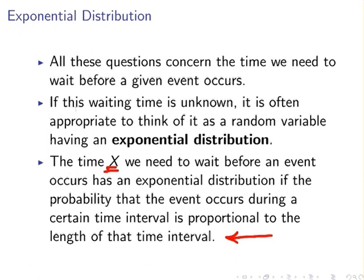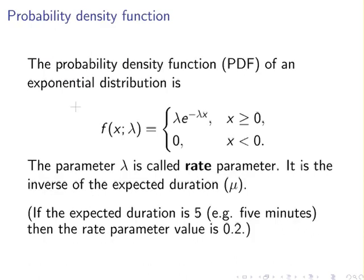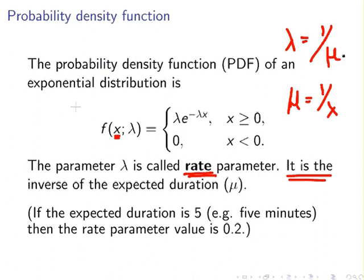The probability density function of the exponential distribution is given as follows. X is some time period — a realization such as two years or ten seconds. Lambda is the rate parameter, and it is the inverse of the expected duration, so mu equals one over lambda, or equivalently lambda equals one over mu.